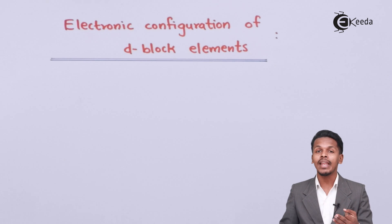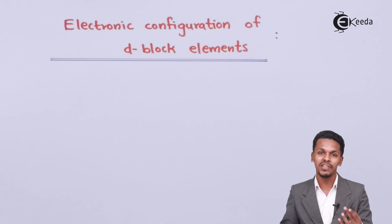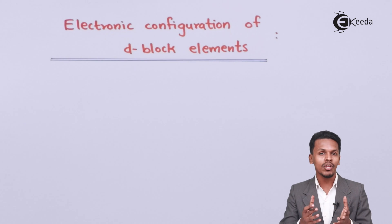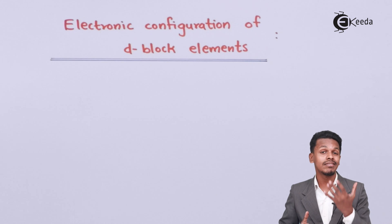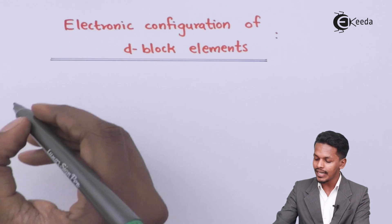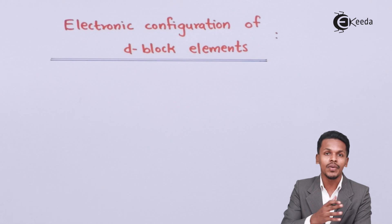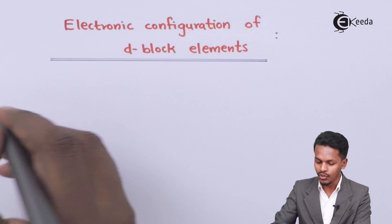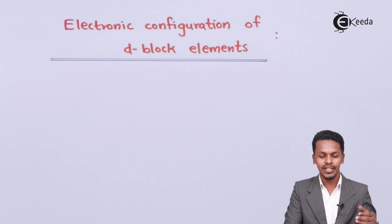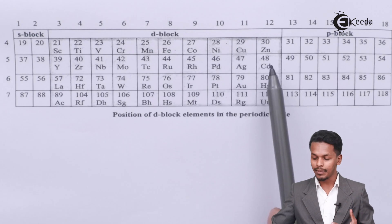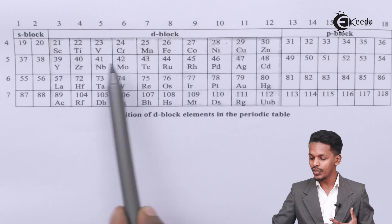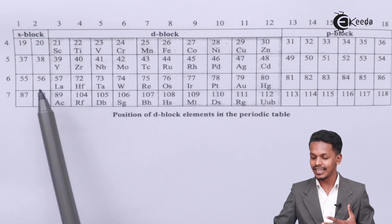D-block elements are divided into four series: the 3d series, 4d series, 5d series, and 6d series. For the 3d series, it ranges from scandium to zinc. For the 4d series, it ranges from yttrium to cadmium.